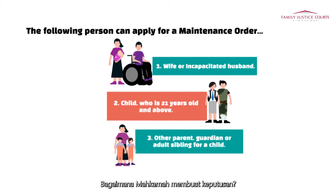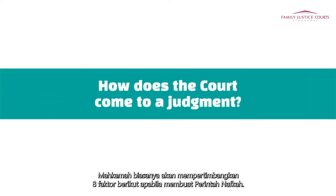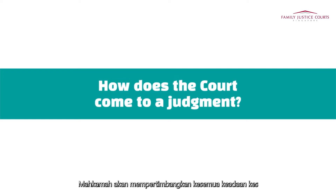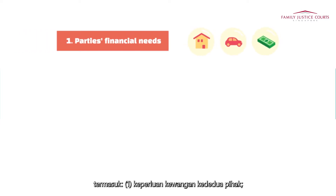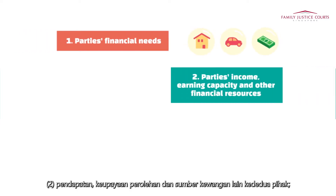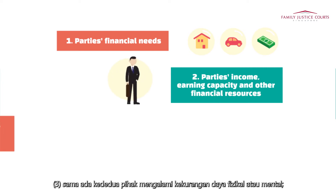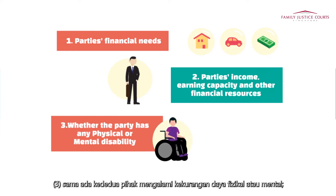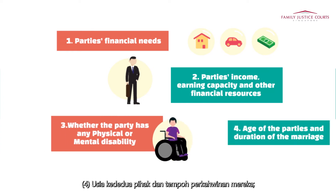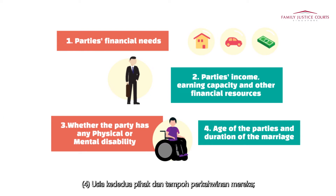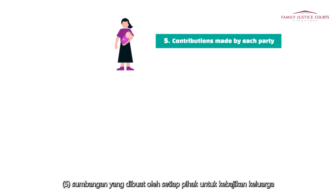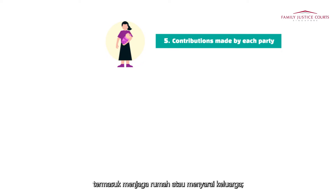How does the court come to a judgment? The court would typically consider the following factors in making a maintenance order, taking into account all circumstances of the case, including: 1) the party's financial needs; 2) the party's income, earning capacity, and other financial resources; 3) whether the party has any physical or mental disability; 4) the age of each party to the marriage and the duration of the marriage; 5) the contributions made by each party to the family welfare, including looking after the home or caring for the family.